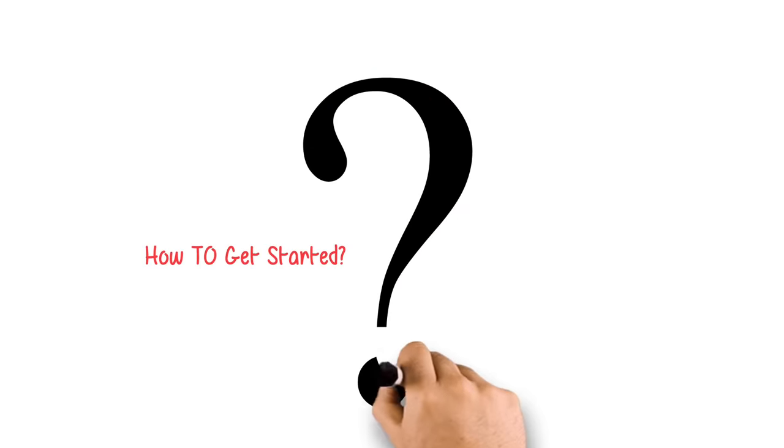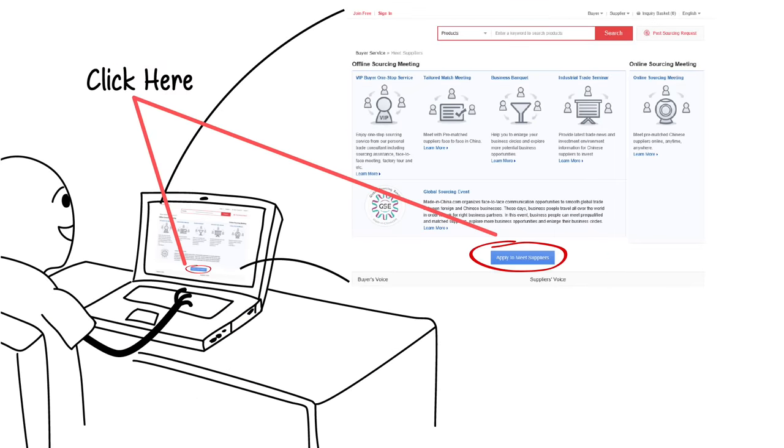How to get started with our online sourcing meeting service? Just click on the apply to meet suppliers blue button and provide details about the products you want to source, including the price range plus the quantity that you're interested in.